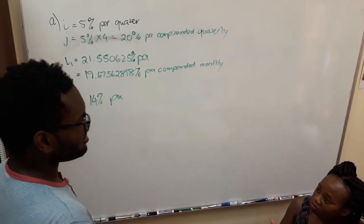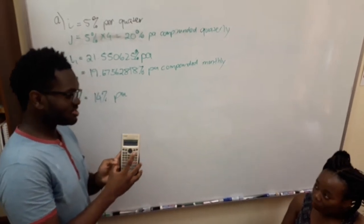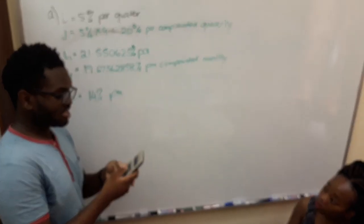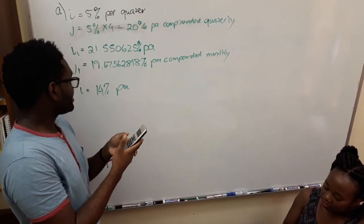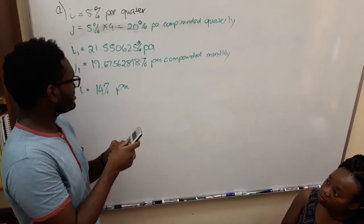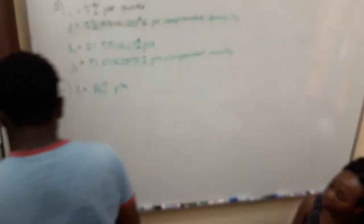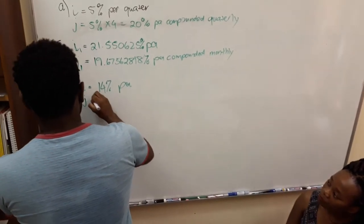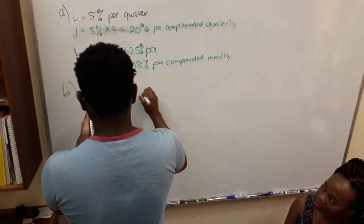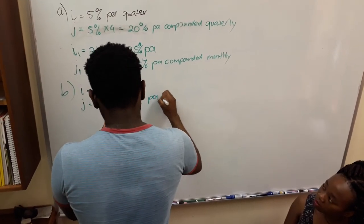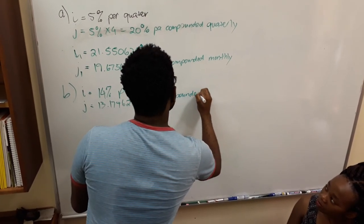Since you already have the I as 14% per annum, we don't need to convert it to compounded already. We can already put this in our calculator. Press the conversion button. N is going to be 12, I is going to be 14%, and you can already solve for the APR which will give you J. 13.17462234% per annum compounded monthly.